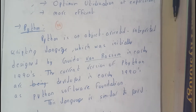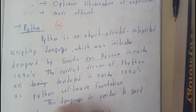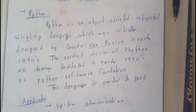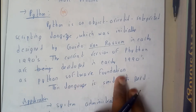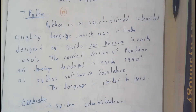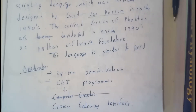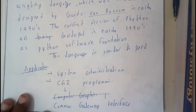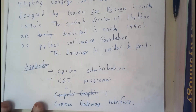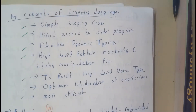This language is almost similar to Perl. The Python Software Foundation was the developer company that developed this software. The main applications of Python are system applications and CGI — that is, Computer Gateway Interface programming.